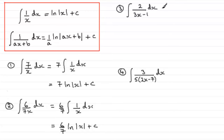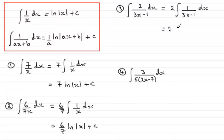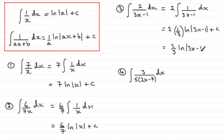For the third one, we pull out the 2 first: 2 times the integral of 1 over (3x minus 1) with respect to x. This is of the type 1 over (ax plus b), with a equal to 3. So this integral gives 1/3 times the natural log of the mod of (3x minus 1). We get 2 times 1/3, which gives 2/3, times the natural log of the mod of (3x minus 1), plus c.